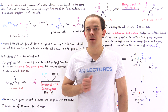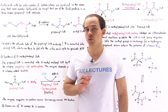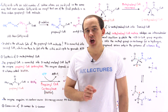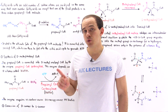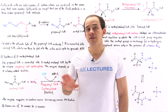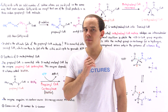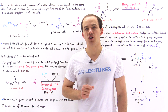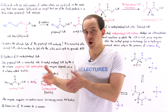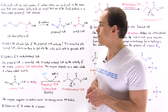Fatty acids which contain an odd number of carbon atoms are broken down in a very similar way to the ones that contain an even number of carbon atoms. The only difference is that in the breakdown of fatty acids with an odd number of carbon atoms, one of the final products formed is a 3-carbon molecule known as propionyl coenzyme A. So aside from generating acetyl coenzyme A molecules, we also generate propionyl coenzyme A molecules.